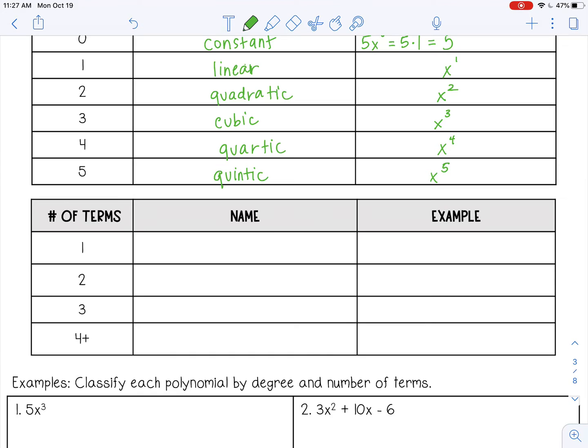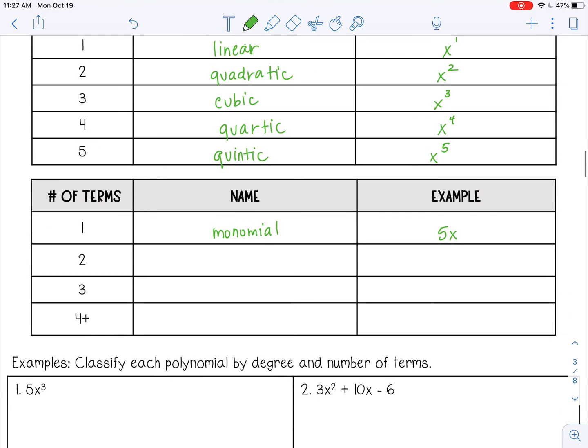Okay, number of terms. So if a polynomial has just one term, it's called a monomial. So for example, 5x. If it has two, it's called a binomial. Think about a bicycle has two wheels, so two terms. So like 4x plus 8.